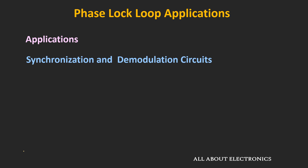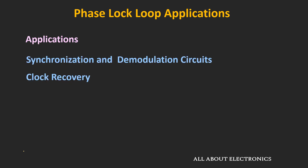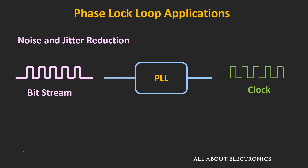Apart from that, when one wants to recover the clock from the incoming bitstream, then using the phase locked loop, it is quite possible. Moreover, in the communication system, for jitter and noise reduction, the phase locked loop is commonly used.